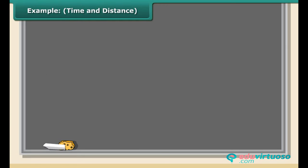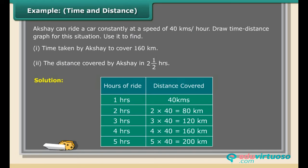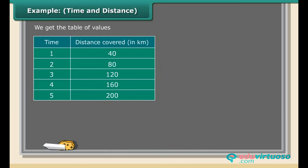Example: Time and distance. Akshay can ride a car constantly at a speed of 40 kilometers per hour. Draw time distance graph for this situation. Use it to find: 1. Time taken by Akshay to cover 160 kilometers. 2. The distance covered by Akshay in 2 and a half hours.